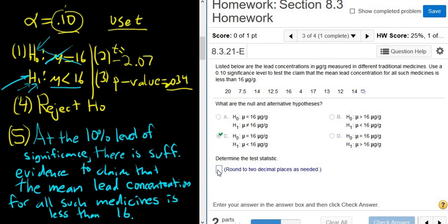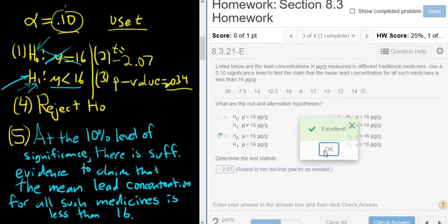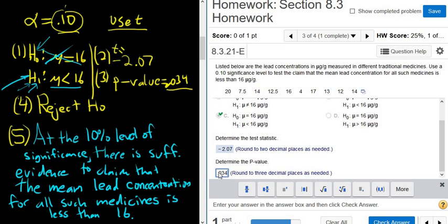Determine the test statistic. It wants two places, so it will be negative 2.07. That's our T. Good stuff. The p-value wants 3. We actually have it to 3 this time, so 0.034.